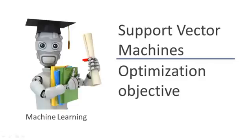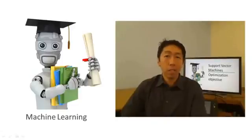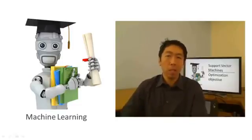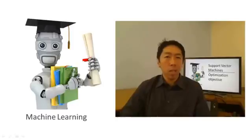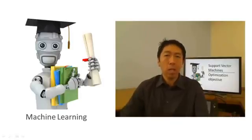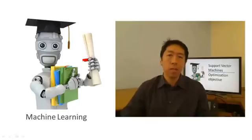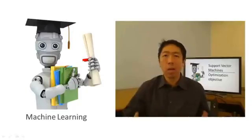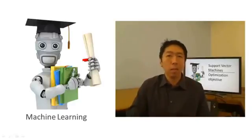But there's one more algorithm that is very powerful and is very widely used, both within industry and in academia. That's called the support vector machine. Compared to both logistic regression and neural networks, the support vector machine, or the SVM, sometimes gives a cleaner and sometimes more powerful way of learning complex non-linear functions. Later in this course, I will do a quick survey of different supervised learning algorithms, but the support vector machine, given its popularity and how powerful it is, will be the last algorithm I'll spend a significant amount of time on in this course.